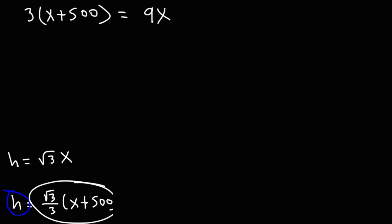Now at this point, we need to distribute the 3 to x plus 500. So it's going to be 3 times x, which will give us 3x, and then 3 times 500. Now 3 times 5 is 15. Add in the two zeros, that gives us 1,500. So 3 times 500 is 1,500.